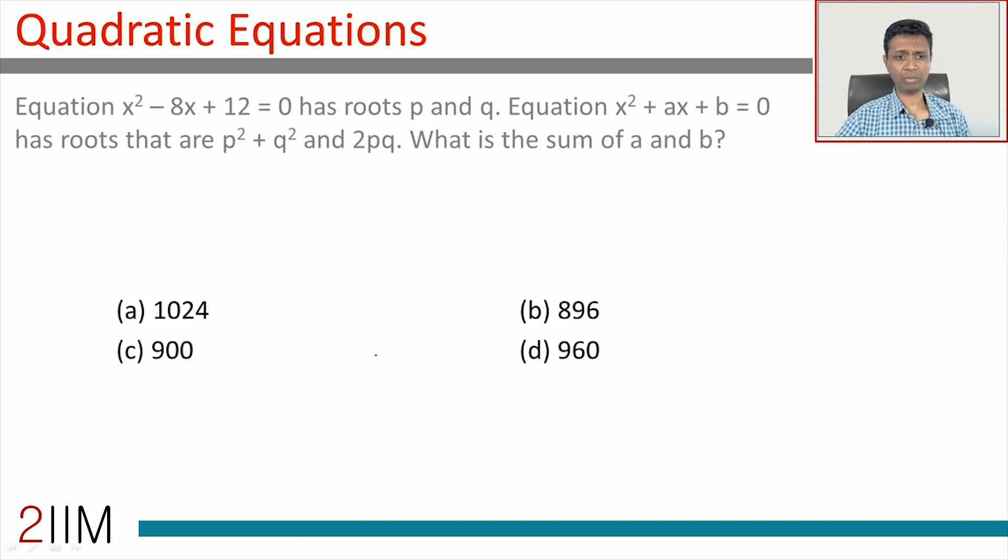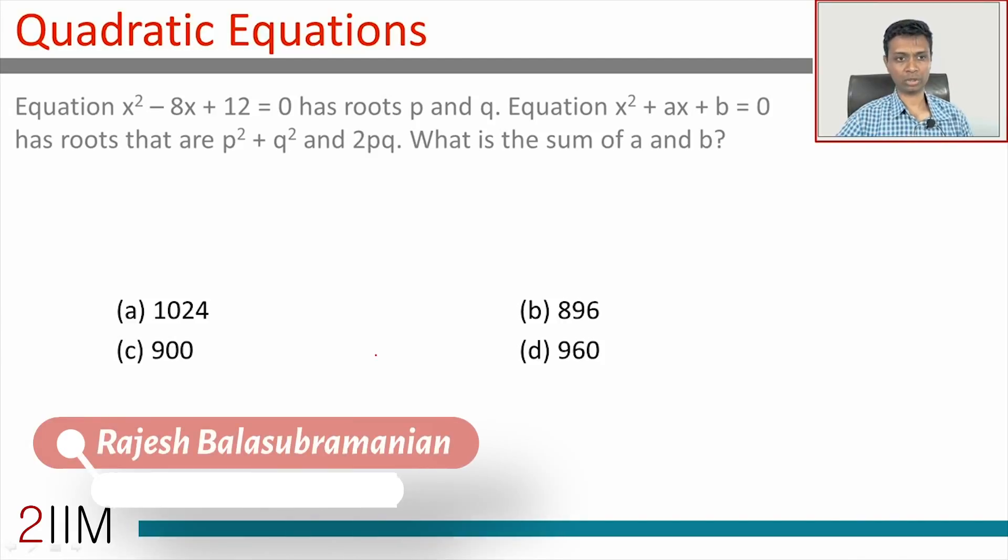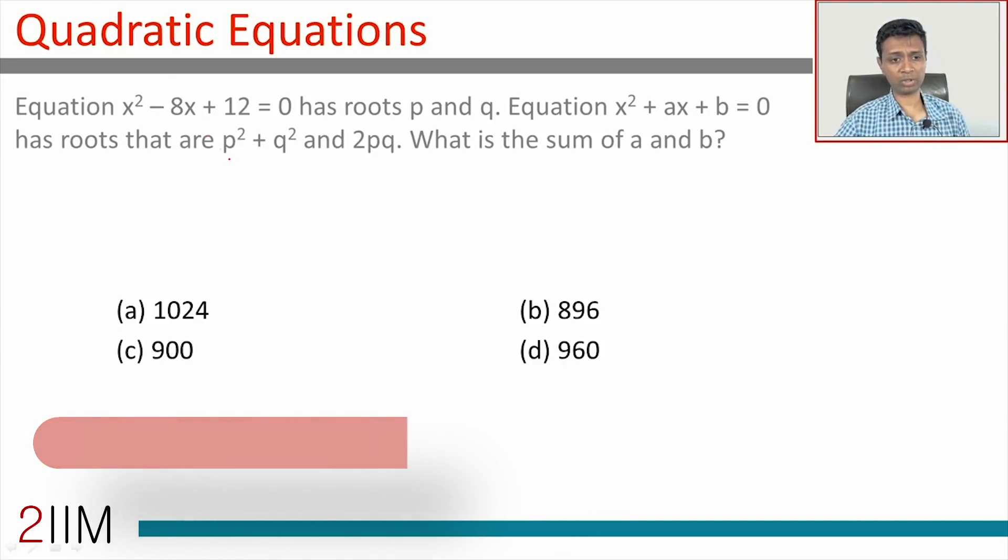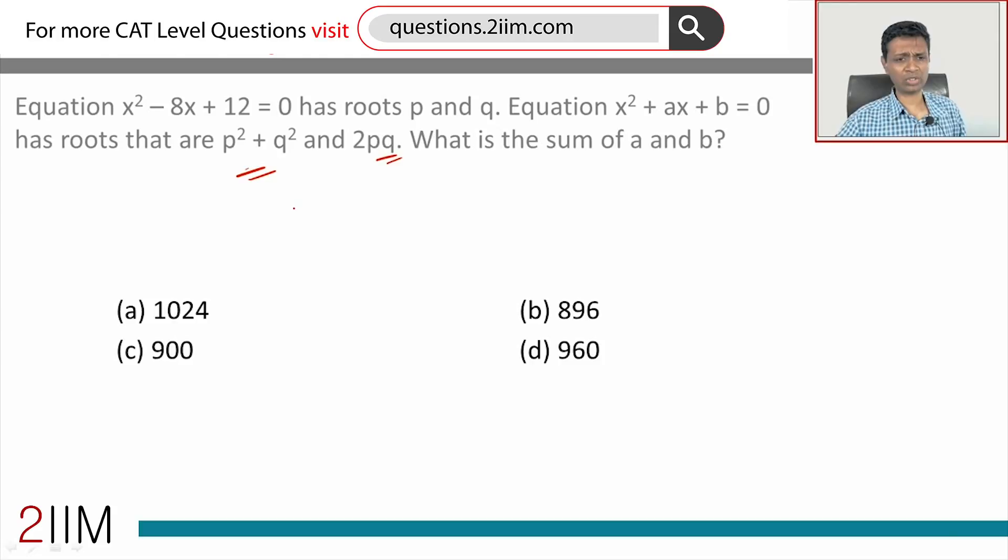Another quadratic equation question, a very simple one. I'm going to rapidly run through this. x² - 8x + 12 = 0 has roots p and q. x² + ax + b = 0 has roots p² + q² and 2pq. What is the sum of a and b? It's a very classic question.